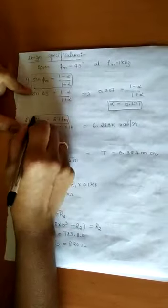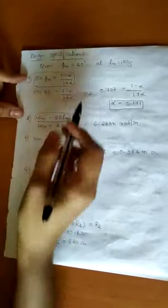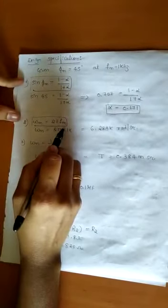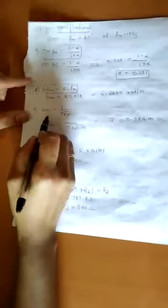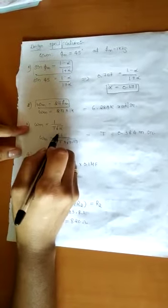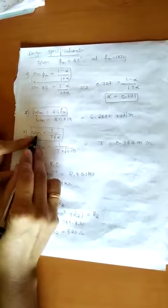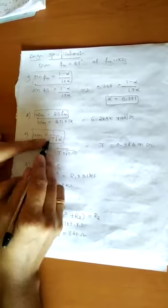Next, ω_m is the maximum angular frequency, given by ω_m = 2π·fm. With fm = 1 kHz, we get ω_m = 6.28 kilo-radians per second. Using the equation ω_m = 1/(T·√α), and substituting the known values of ω_m and α, the only unknown is T. Solving gives T = 0.384 milliseconds.